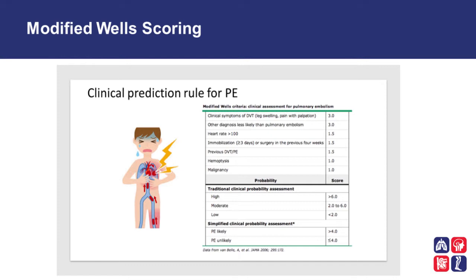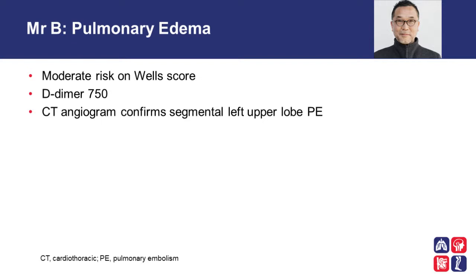Given that he has chest pain and is presenting to the emergency room, a pre-test probability scoring system for pulmonary embolism is applied. Here we see the modified Wells scoring clinical criteria for assessment of pulmonary embolism. The Wells modified scoring system has been shown to be quite sensitive and specific in providing a pre-test probability for pulmonary embolism. He scores moderate risk on the Wells score. His D-dimer is 750, and so the emergentologist goes ahead and does a CT angiogram, which confirms segmental left upper lobe pulmonary embolism.